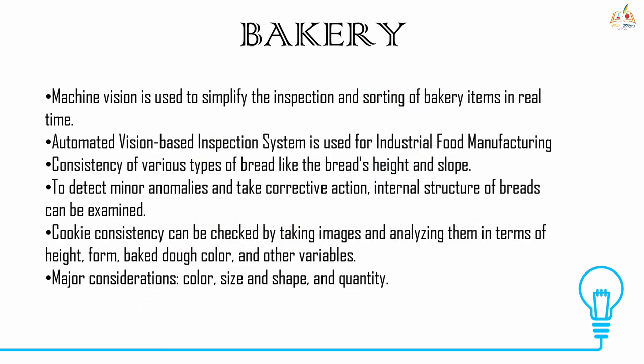In bakery, this concept is used to inspect and sort various bakery items. An automated vision-based inspection system is used for industrial food manufacturing. The consistency of various types of bread — like bread's height and slope — can be measured. It helps detect minor anomalies and take corrective action. The internal structure of bread can also be examined. Cookie consistency can be checked by taking images and analyzing them in terms of height, form, baked dough color, and weather variables. The major considerations are color, size, shape, and quantity.